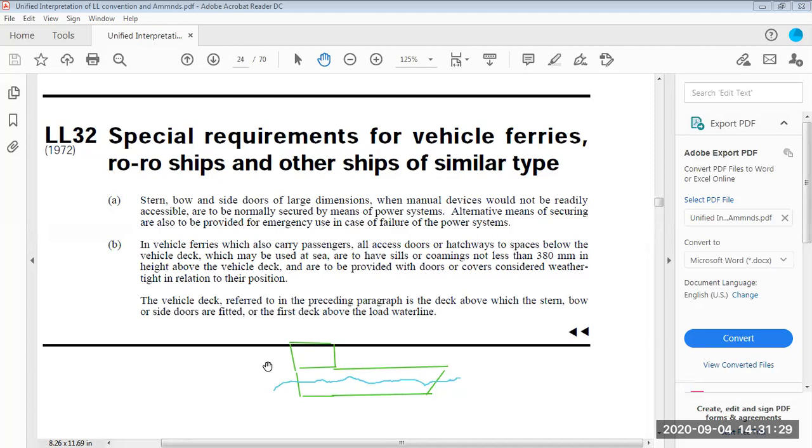Basically, as per load line regulations, we want to calculate the survival of the ship, and for that they have a design freeboard of the ship, the distance from water line to the Plimsoll line. For deciding this freeboard, they have assumed a criteria that your uppermost continuous deck, the main deck or the uppermost continuous deck or the weather deck, is a continuous deck. There is no opening, it's a continuous water tight deck.